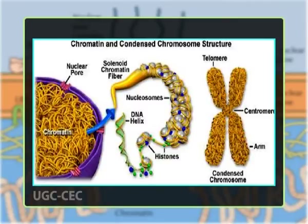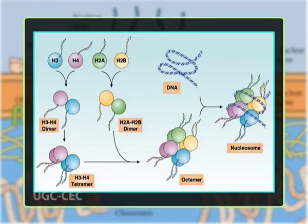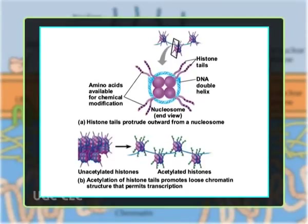Chromatin assembly involves a range of events beginning with the formation of the basic unit, the nucleosome, and ultimately giving rise to a complex organization of specific domains within the nucleus. The stepwise assembly can be described as follows: the first step is the deposition of a tetramer of newly synthesized H3-H4 to form a sub-nucleosomal particle, which is followed by the addition of the two H2A-H2B dimers. This produces a nucleosomal core particle consisting of 146 base pairs of DNA wound around the histone octamer. This core particle and the linker DNA together form the nucleosome. Newly synthesized histones are specifically modified, for example by acetylation of histone H4.